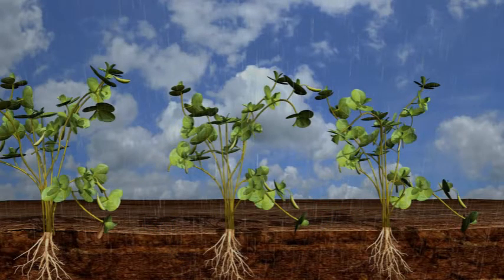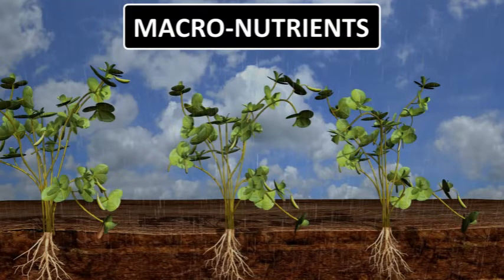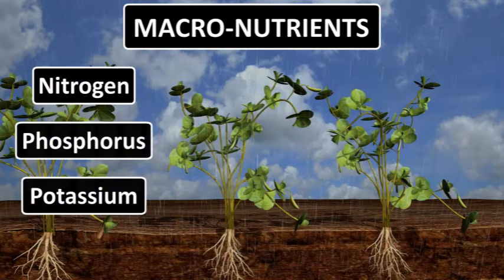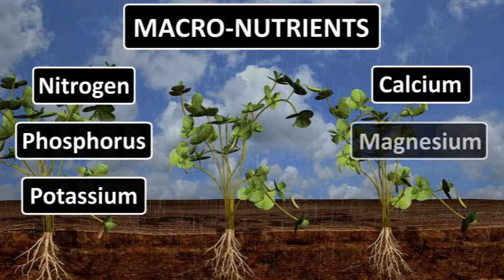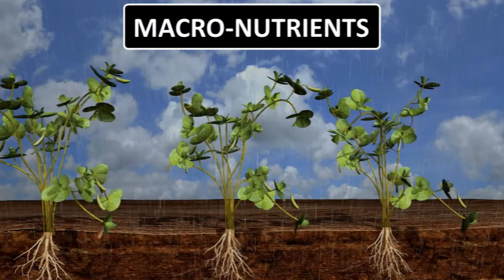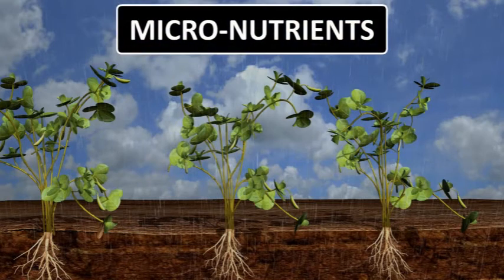Among these 13 nutrients, 6 are required in large quantities, so these nutrients are called macronutrients. Nitrogen, Phosphorus, Potassium, Calcium, Magnesium, and Sulphur are the macronutrients. The other 7 nutrients are used by plants in small quantities, so these nutrients are called micronutrients.